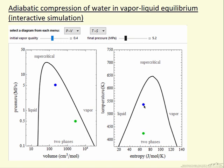Because we're looking at reversible adiabatic compression, this means the entropy doesn't change. So the blue dot is always going to be vertically on the temperature-entropy diagram. It's going to have the same entropy as we started with.